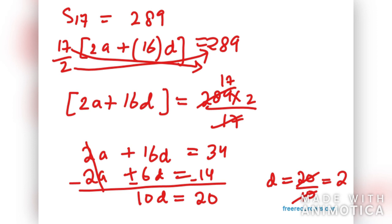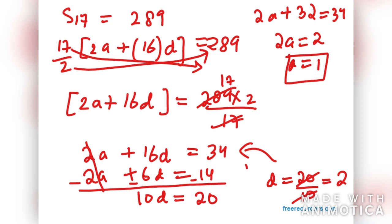We need to find SN, so we should have A as well. Putting the value of D in equation 2, 2A plus 16 times 2 is 32 equals 34. That means 2A equals 34 minus 32 which is 2. So A in this case is 1. D is 2, A is 1. Now we need to find SN.